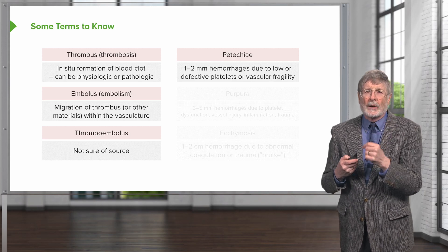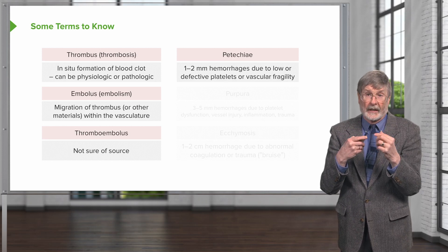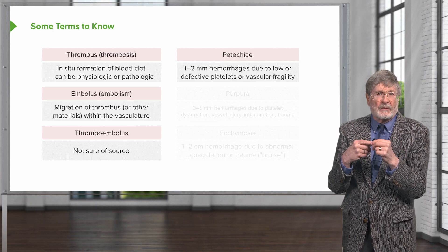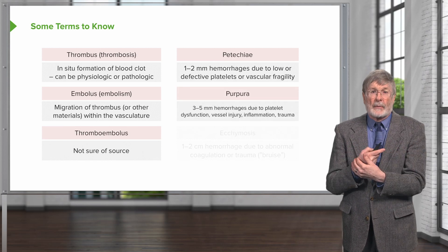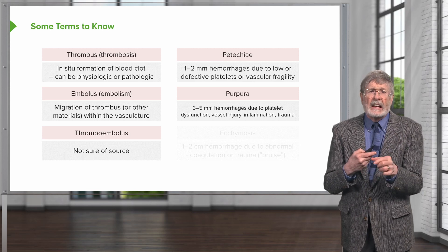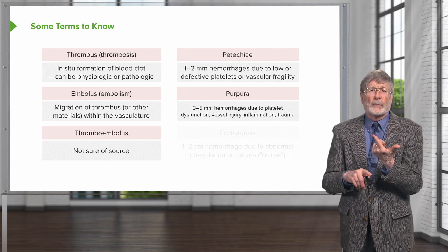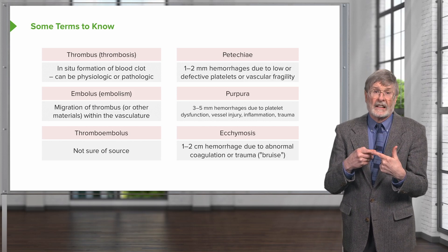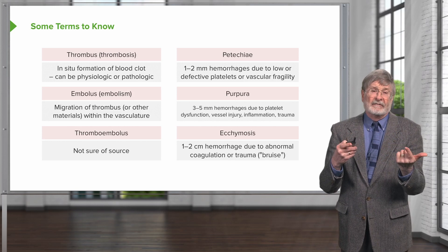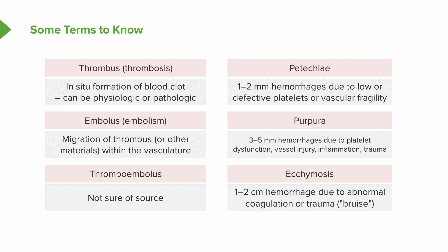Petechia are little, tiny one to two millimeter hemorrhages, indicative of either defective platelets, platelets not working appropriately, inadequate platelets, or intrinsic vascular fragility — and there are a number of collagen vascular diseases where that occurs. Slightly larger hemorrhages are called purpura — three to five millimeters in size — indicative of platelet dysfunction, inadequate platelets, vessel injury, inflammation, or trauma. And then we have the larger ones that everyone recognizes: ecchymosis. These are one to two centimeter hemorrhages, and they can reflect abnormal coagulation involving either platelets or coagulation factors, or they can be due to trauma — the very typical bruise most of us are familiar with.